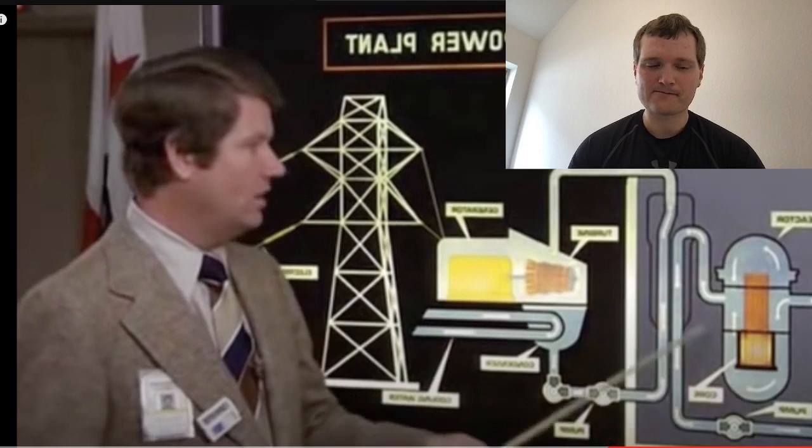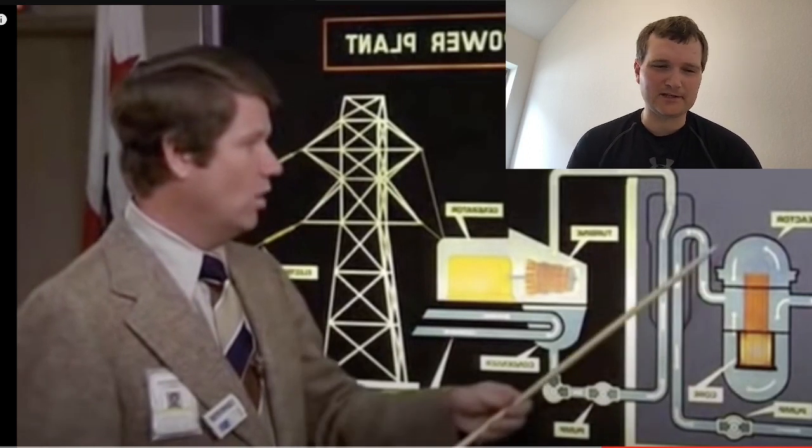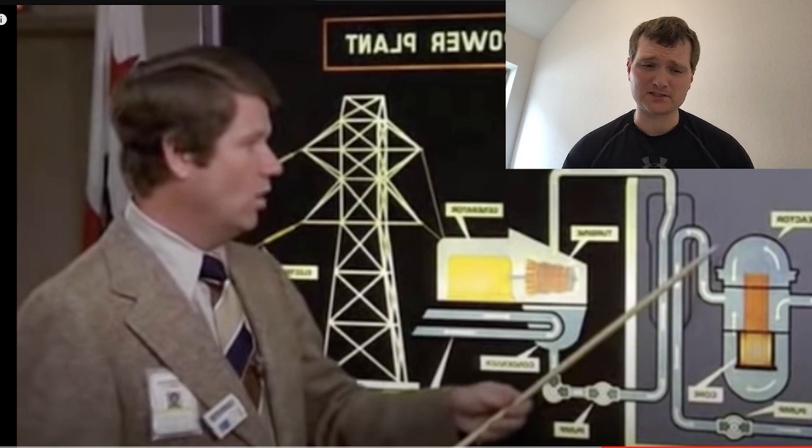A bit of a simplification. The reactor vessel is actually not the core. The core is the arrangement of the fuel assemblies within it. The reactor vessel acts as another containment layer to protect the core in addition to the reactor coolant system and the containment building which houses all of this structure.